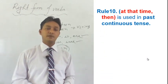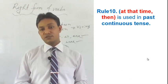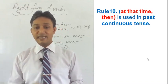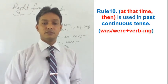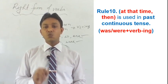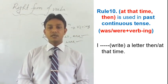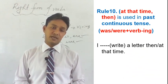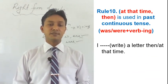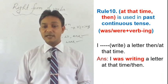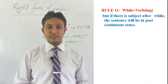Rule number ten: about past continuous tense. If any work was going on in the past, we call it past continuous tense. If we find 'at that time' or 'then' in a sentence, we write it in past continuous tense. The structure is: subject + was/were + V1 + ING. Example: 'I was writing a letter at that time.'